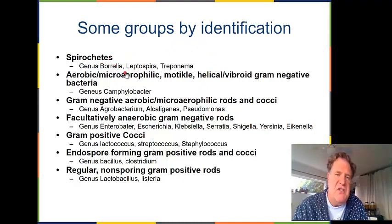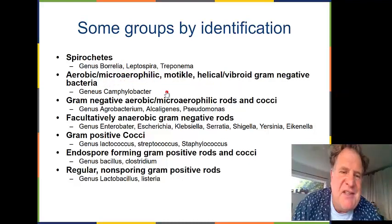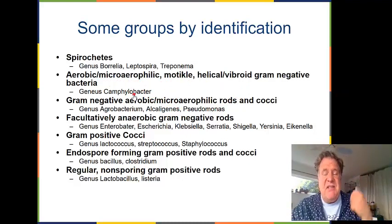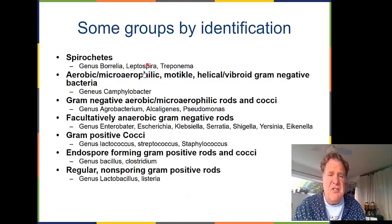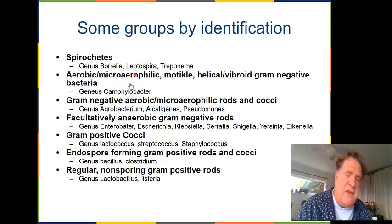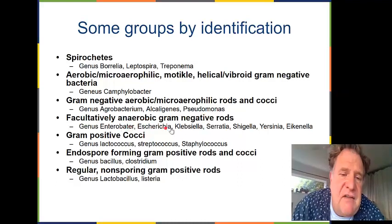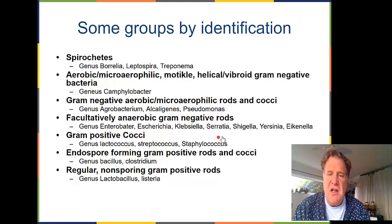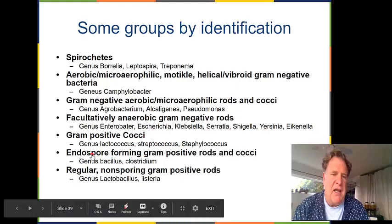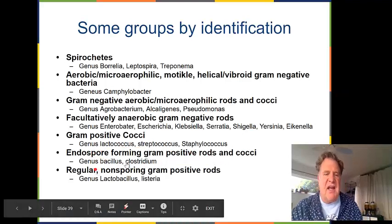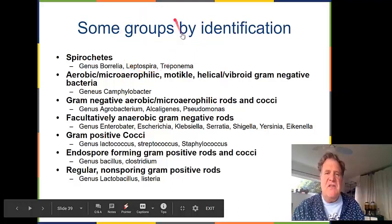Some specific group identifications: spirochetes include genera Borrelia, Leptospira, and Treponema. Aerobic microaerophilic motile helical/vibrioid gram-negative bacteria include Campylobacter. Gram-negative aerobic/microaerophilic rods and cocci include Agrobacterium, Alcaligenes, and Pseudomonas. Facultatively anaerobic gram-negative rods include genera Enterobacter, Serratia, Klebsiella, Shigella, and Eikenella. Gram-positive cocci include Lactobacillus, Streptococcus, and Staphylococcus. Endospore-forming gram-positive rods and cocci include genera Bacillus and Clostridium. Regular non-spore-forming gram-positive rods include Lactobacillus and Listeria. These are grouped by identification characteristics.